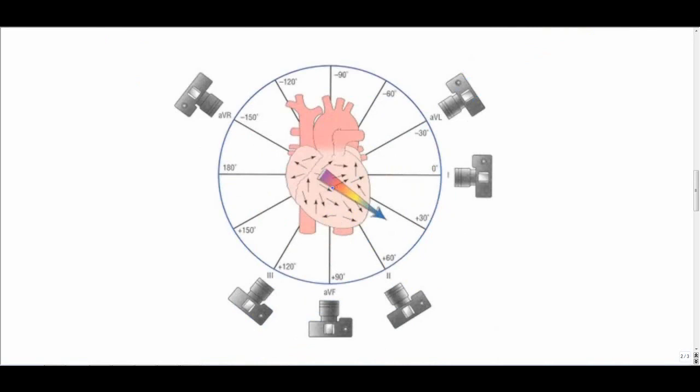You can't use precordial leads because they only can see the depolarization in the anterior versus posterior axis. If we want to see if it's depolarizing towards the left or right ventricle, we have to use limb leads.